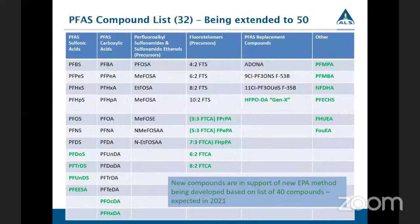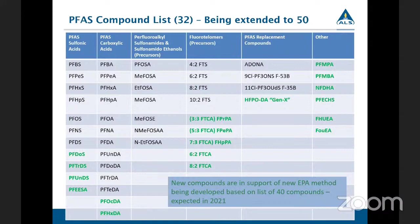This is our current compound list. Right now we're running 32 compounds, and this is consistent across the ALS labs. However, in the Waterloo lab, validation is underway to expand this list further to 50 compounds — the additional compounds shown in green are in the process of being added to our targeted suite. Initially, labs and regulators focused on PFAS with longer chains due to their persistence and ability to accumulate in organisms. As we continue to add new compounds, we're also looking at short-chain PFAS as well as precursors and replacement compounds. These new compounds being validated are in support of a new EPA method that's being developed, based on a list of 40 compounds and expected to be published sometime this year.